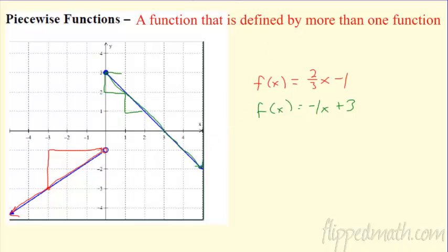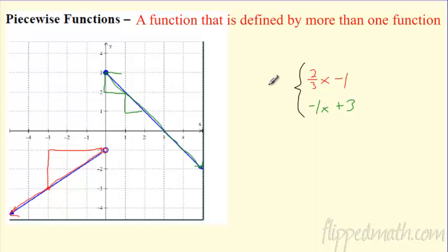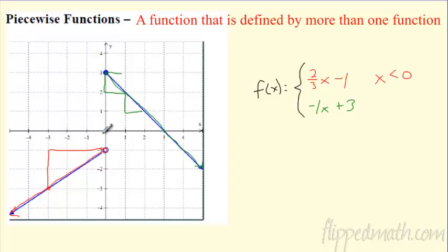So how in the world can I write this as one function? What we're going to do is mash them together using this fancy bracket. So really this is my function, which is great, except I have to define some intervals. I can't just say it's always two-thirds x minus one. How do I know when it stops? This is true when x is less than zero — here's zero, everything negative, everything less than zero. That's defining this function, and it's not including it because it's an open circle.